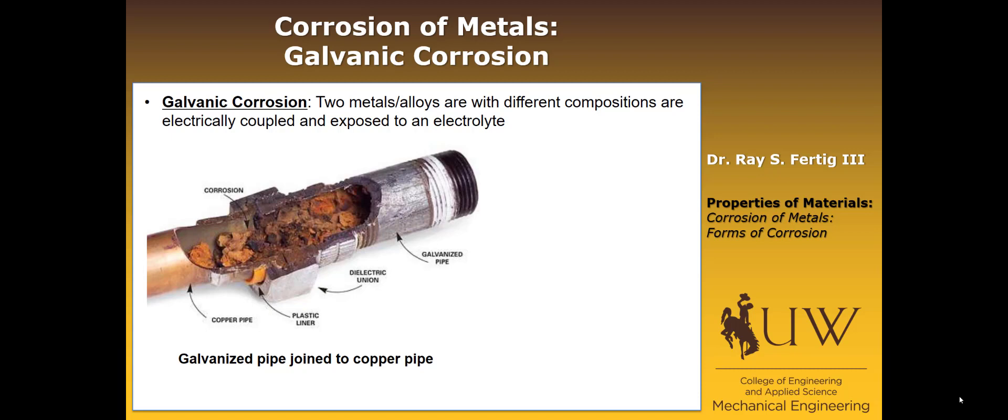One that is a bit more specialized to what we've been talking about is galvanic corrosion. That occurs when you put two metals or alloys with different compositions, couple them electrically, and expose them to an electrolyte.